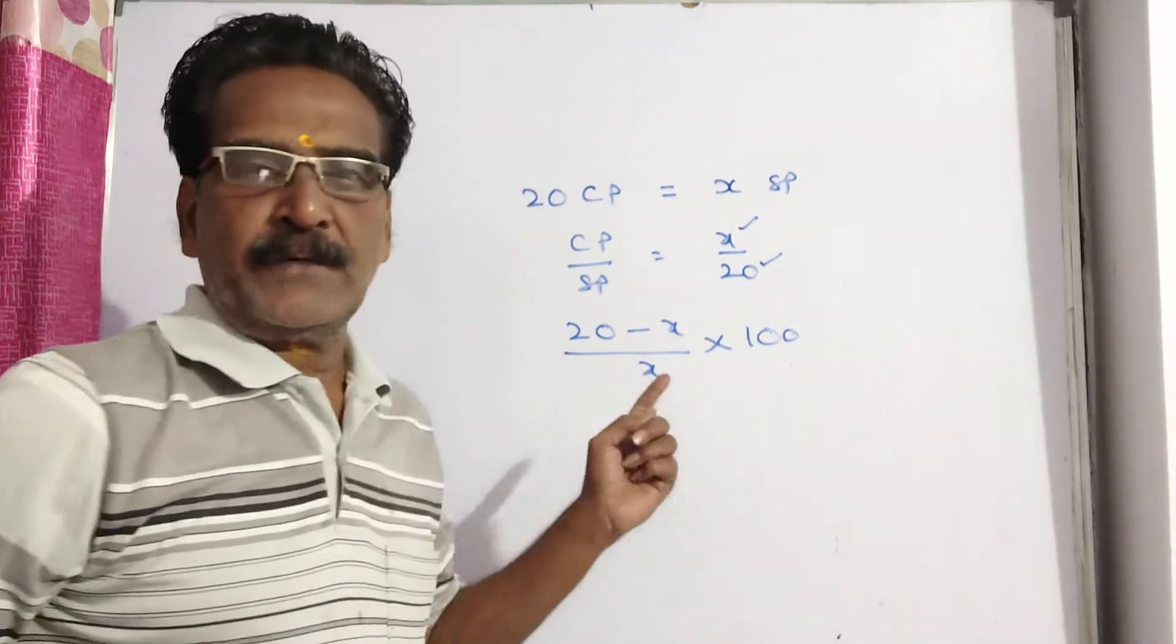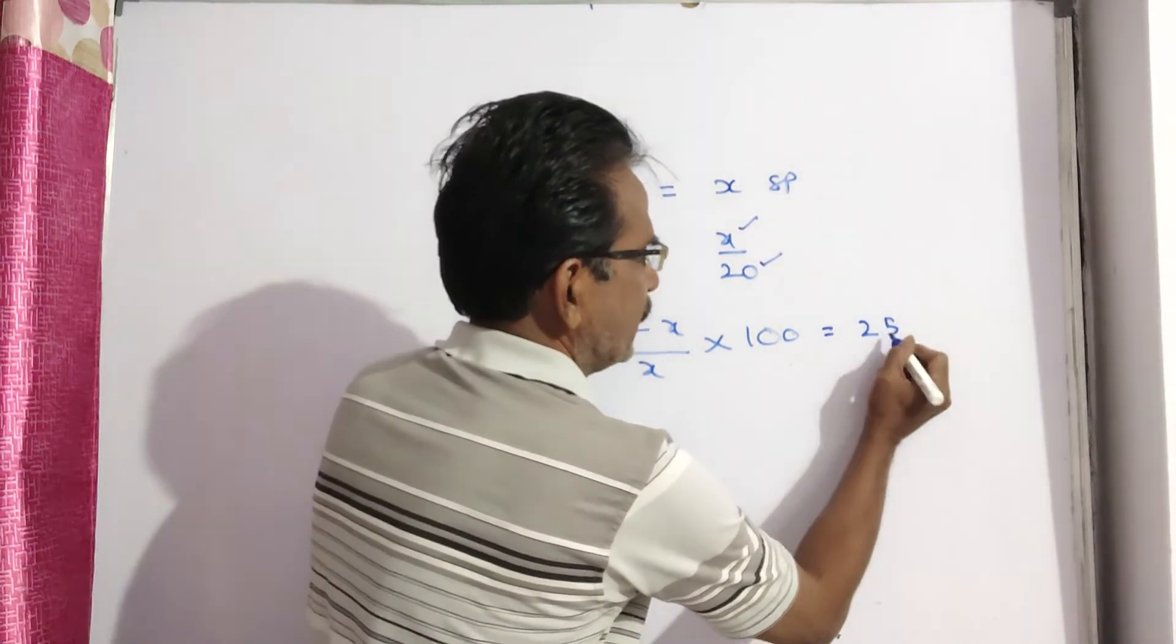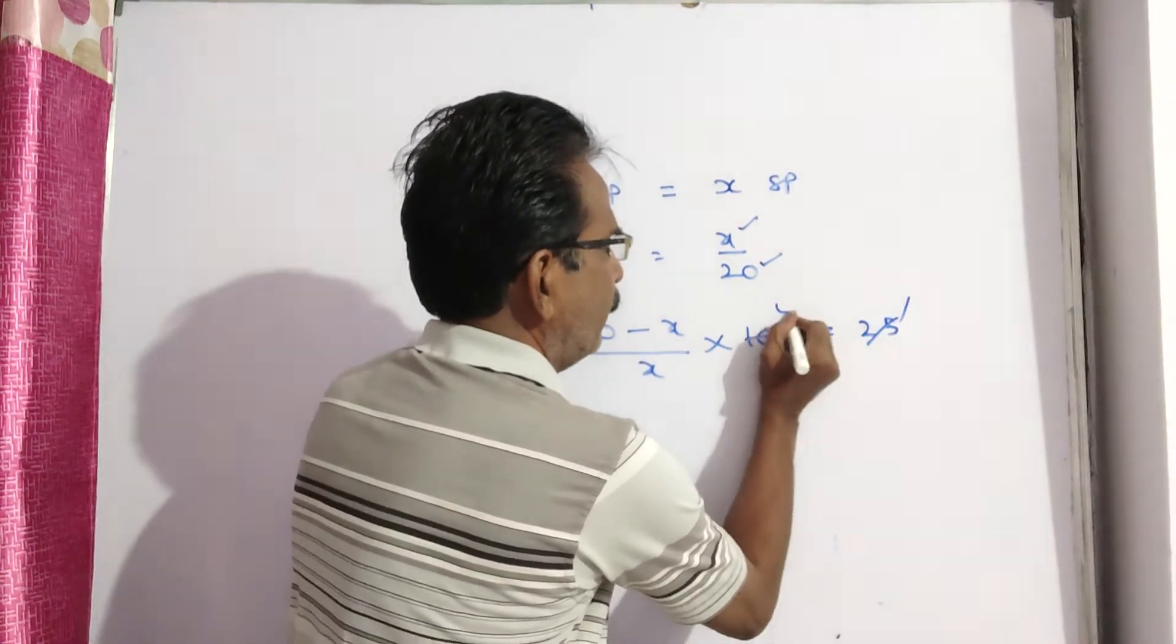By doing this, we get the profit percent that is given. How much? 25%. 25 by 100 is 1 by 4.